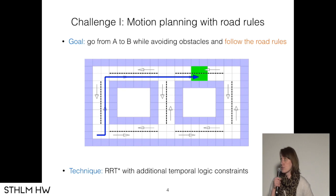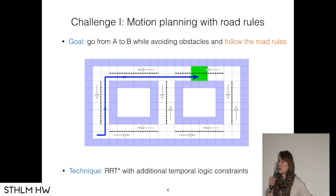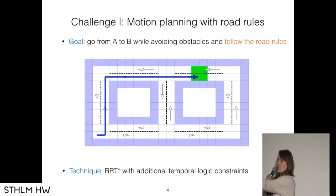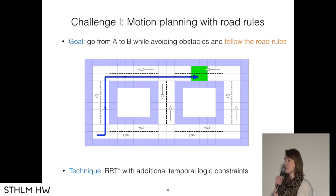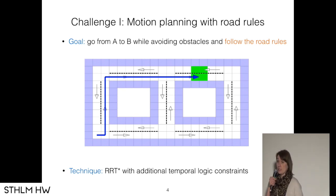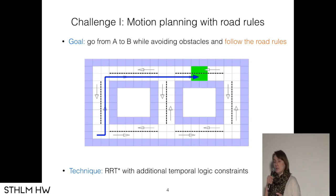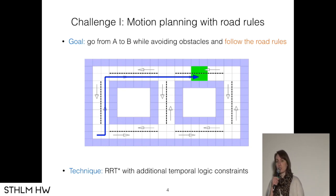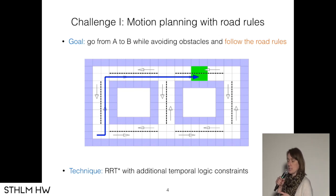Our goal is to go from A to B while avoiding obstacles and following the road rules. What you hope for — in this very simplified scenario where the purple stuff is the sidewalk — is that you just want to go in the right lane and reach the goal region in the optimal way. It turns out we can do RRT* with additional temporal logic constraints and it works pretty nicely.